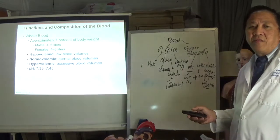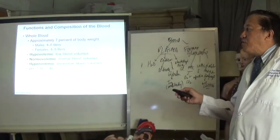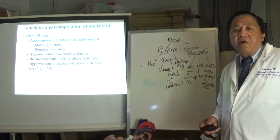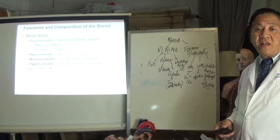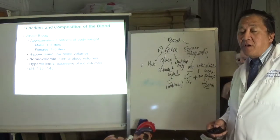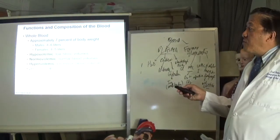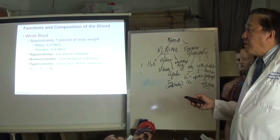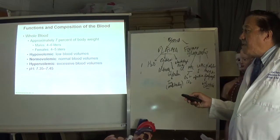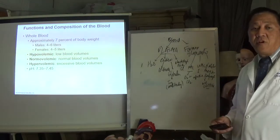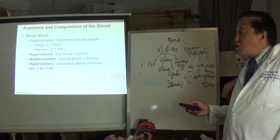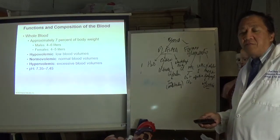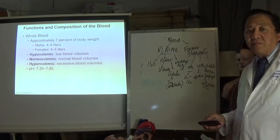Normally blood volume ranges from four to six liters for men and four to five liters for women. If the amount of blood is less than normal it is called hypovolemia. Within the normal range it is normovolemia. If greater than six liters for men or greater than five for women, it is hypervolemia. The normal pH of blood is 7.35 to 7.45.